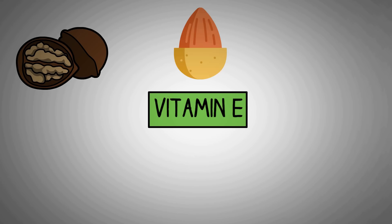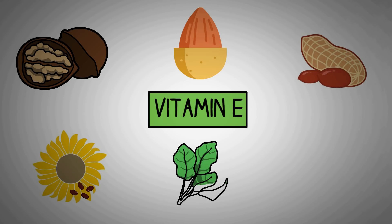It can be found in walnuts, almonds, peanuts and it is also found in sunflower seeds, spinach and broccoli. The best oils that have this vitamin are sunflower oil, wheat germ oil and soybean oil.